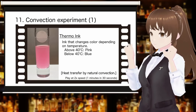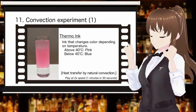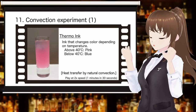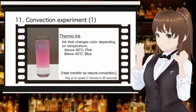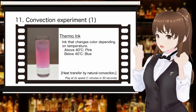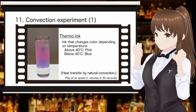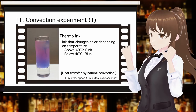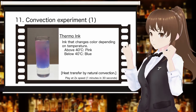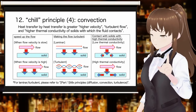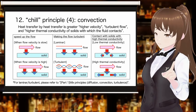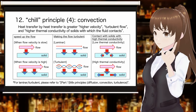Let us confirm the transfer of heat by convection with an experiment. The liquid in the glass is thermo-ink, a special ink that changes color depending on the temperature. The white ball in the glass is non-melting ice — water frozen in a plastic ball from which water does not melt out. The temperature is cooled from the liquid around the non-melting ice and the color changes from pink to blue. Since the liquid with lower temperature has heavier specific gravity, the blue liquid sinks to the bottom of the glass. Heat transfer by convection increases with higher flow velocity, turbulent flow, and higher thermal conductivity of solids with which the fluid contacts. Using a shaker made of a material with high thermal conductivity to generate fast-flowing forced convection, including turbulence, is the key to cooling cocktail ingredients by convection.